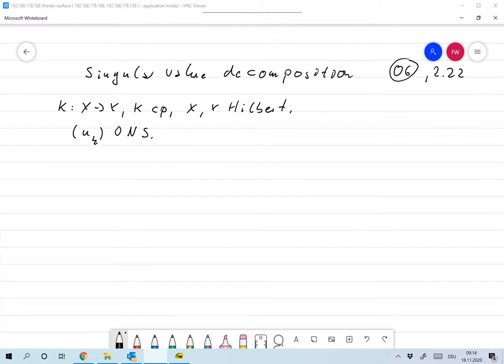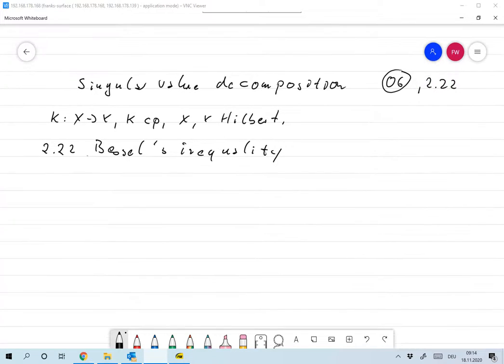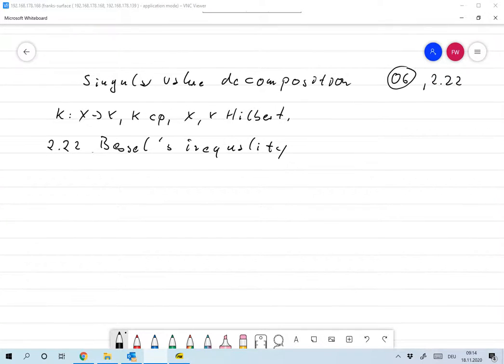So let me do this correctly. So this is 2.22 Bessel's inequality. Okay, an orthonormal system.